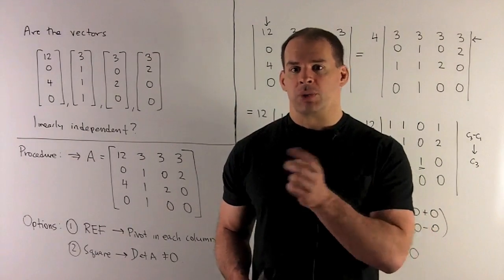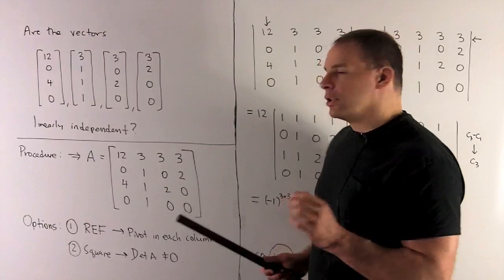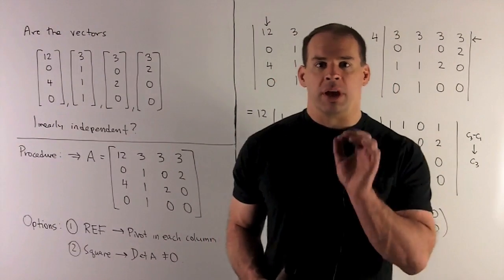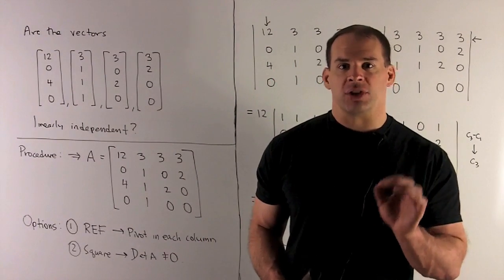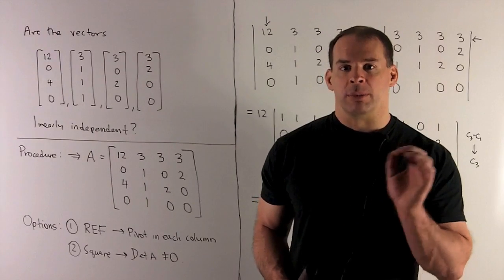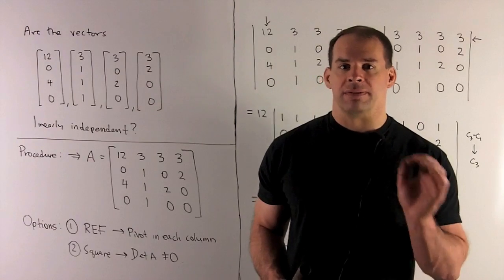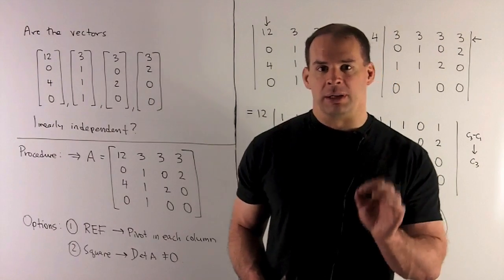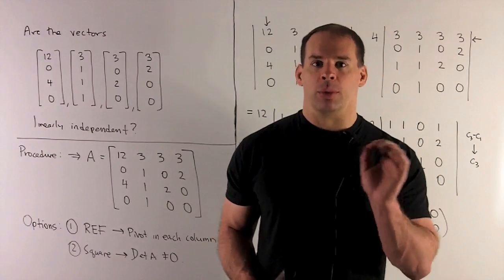Now, in our special case here, we have a square matrix. So the quick way to check whether you have a pivot in each column is just to take the determinant. If the determinant is non-zero, you have a pivot in each column and you're linearly independent. If not, then you'll be linearly dependent, so that means determinant will be zero.